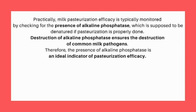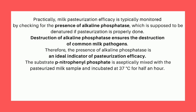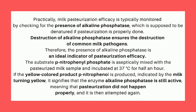Therefore, the presence of alkaline phosphatase is an ideal indicator of pasteurization efficacy. The substrate p-nitrophenyl phosphate is aseptically mixed with the pasteurized milk sample and incubated at 37 degrees Celsius for half an hour. If the yellow-colored product p-nitrophenol is produced, indicated by the milk turning yellow, it signifies that the enzyme alkaline phosphatase is still active, meaning that pasteurization did not happen properly and it is attempted again.